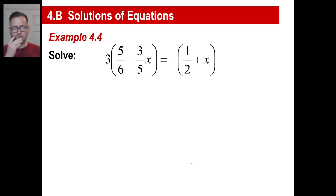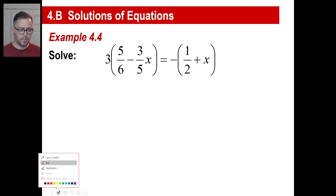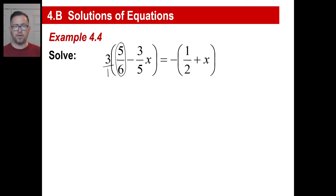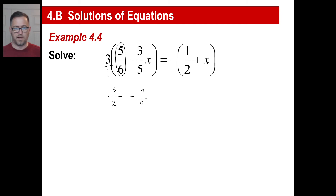Well, look at this equation. You're just going to multiply and distribute. If you want to think of that 3 as 3 over 1, that might help. Let's distribute the 3 first: 3 times 5 is 15, and 15 over 6 — since both are divisible by 3 — simplifies to 5 halves. Then distributing across the other term: 3 over 1 times 3 over 5 gives 9 over 5x. That equals the opposite of everything in the parentheses: negative 1 half and then minus x.